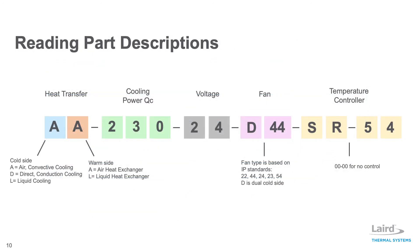Laird Thermal Systems series of thermoelectric cooler assemblies follow a product description nomenclature based on specific attributes. The part description indicates the type of heat transfer, cooling requirement, voltage, fan type, and if applicable, the temperature controller used to deliver precise temperature control. This makes it easier for an engineer to understand the difference in each model.